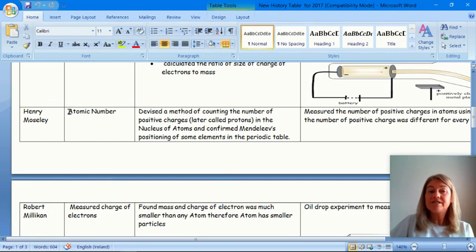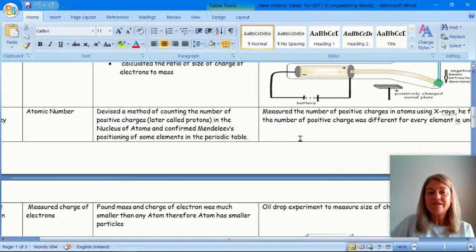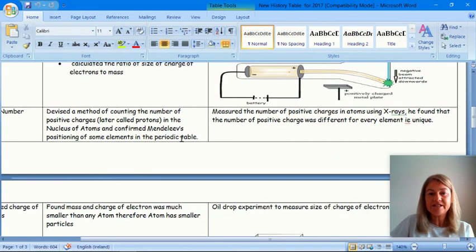I haven't mentioned what the atomic number is yet. He devises a method of counting the number of positive charges. He does not discover protons - that's what Ernest Rutherford discovers - but he does know that each positive charge represents something in the nucleus which are later called protons. He measured the number of positive charges in atoms using x-rays.